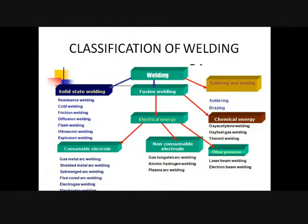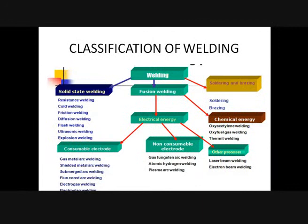Under non-fusion pressure welding, there are two categories: with and without the application of heat. With application of heat, it includes resistance welding, brazing, soldering, and braze welding. Resistance welding further includes spot welding, seam welding, projection welding, and percussion welding. Without the application of heat, you find cold pressure welding and cryogenic welding.